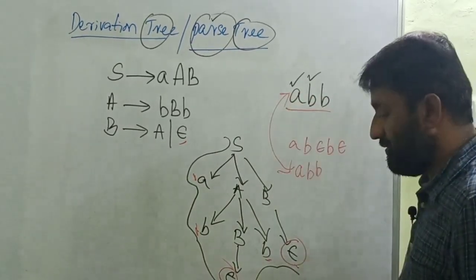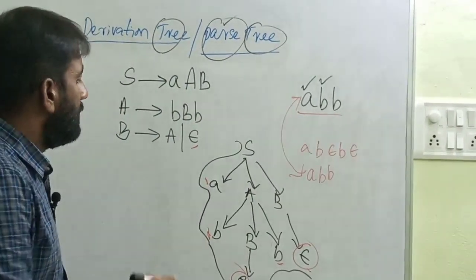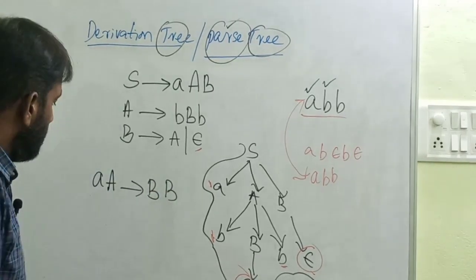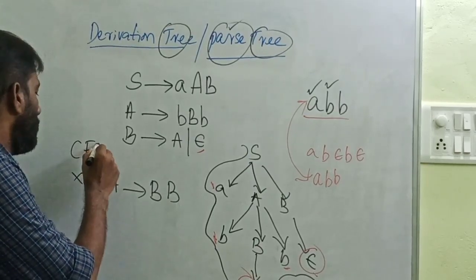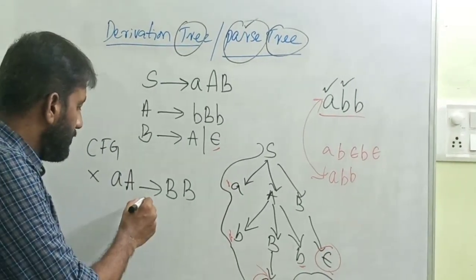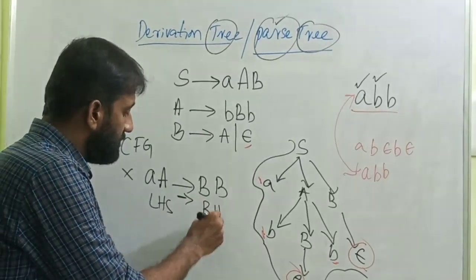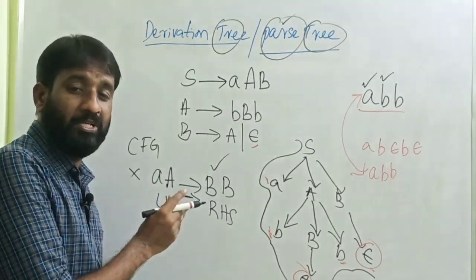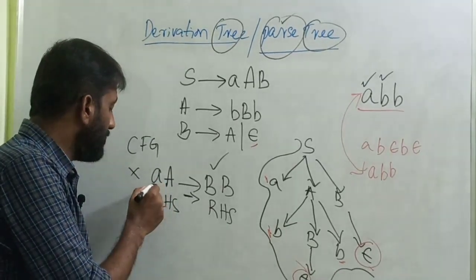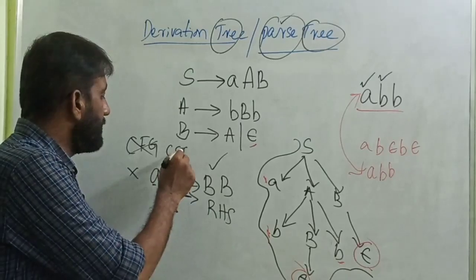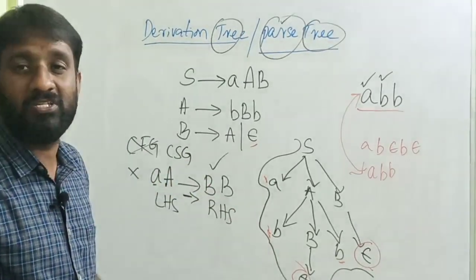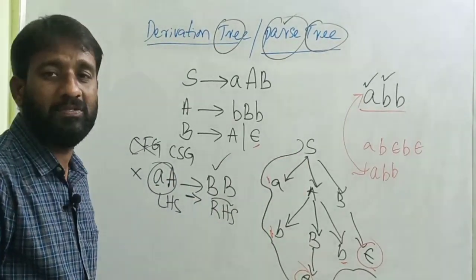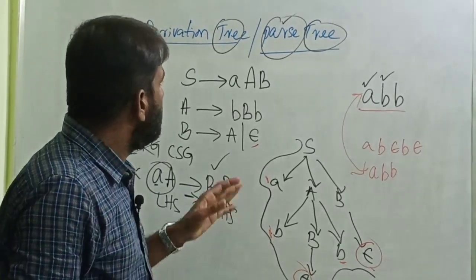One more important thing: if I write a grammar like AA → BB, this is not a context-free grammar. In context-free grammar, the LHS of a production must contain exactly a single non-terminal, but here the LHS contains a terminal as well. This grammar is a context-sensitive grammar. Can we construct a parse tree for a context-sensitive grammar? It is not possible, because you would need to replace AA with BB — you cannot write AA as a root node. This is all about derivation tree or parse tree.